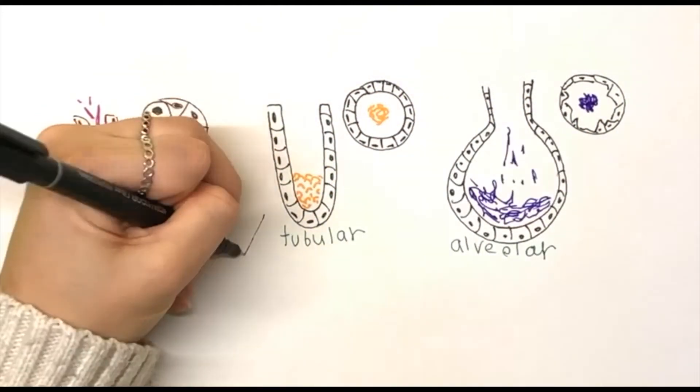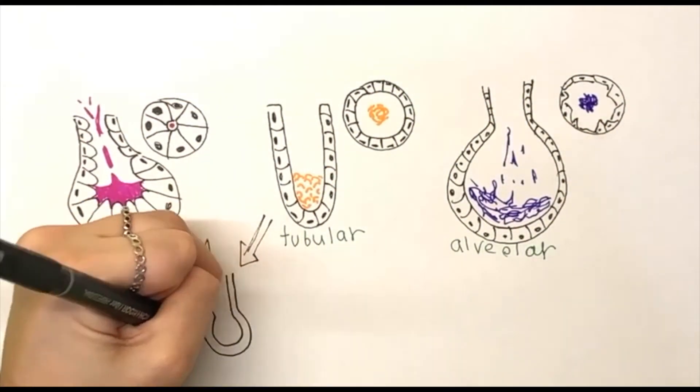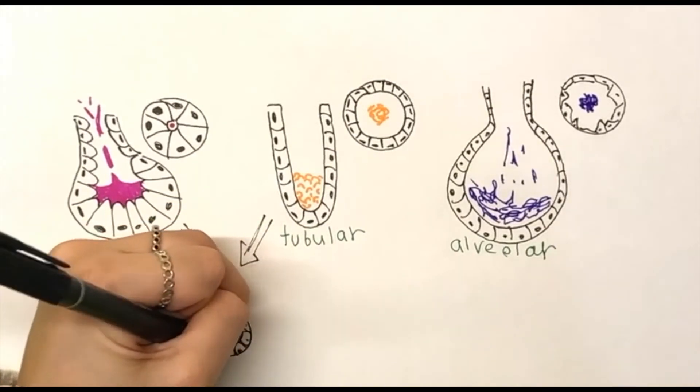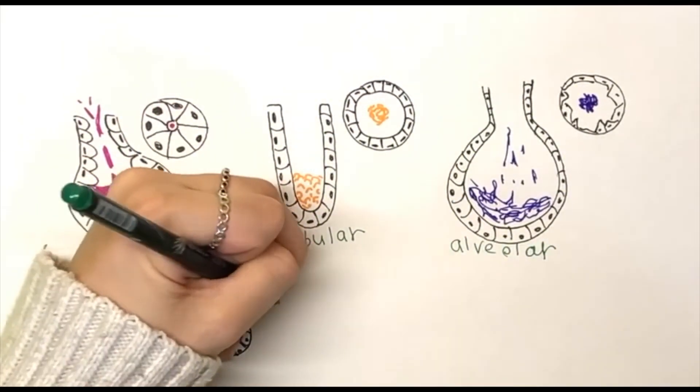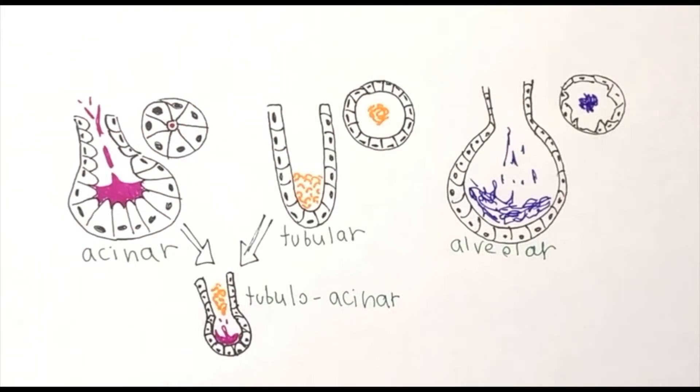An alveolar gland has a wide and irregular lumen. A tubuloacinar secretory unit is an intermediate between acinar and tubular in terms of morphology and nature of secretion.